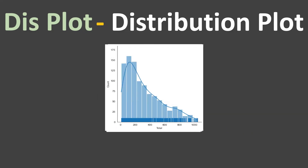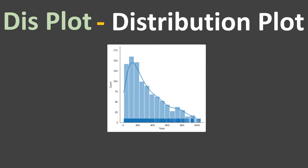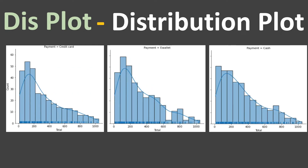It produces a combined result. After this, it also provides the facility to split this one plot further based on categorical variables. As you can see here, that one distribution plot is split into three payment methods, and each has a combination of KDE, histogram, and rug plots.